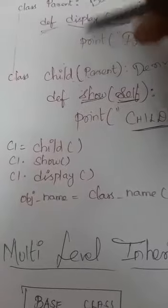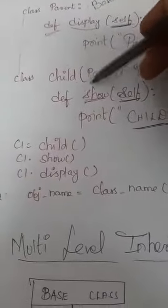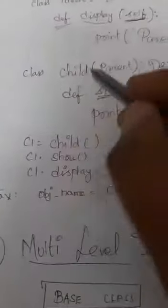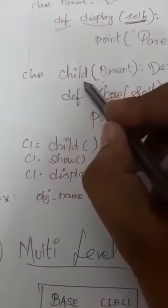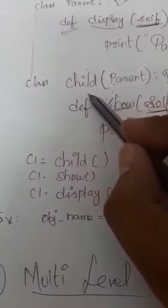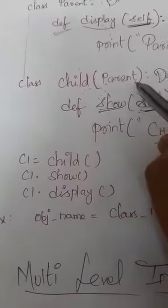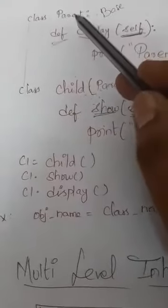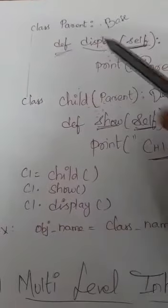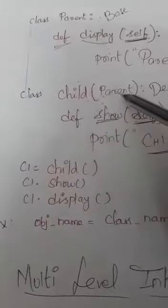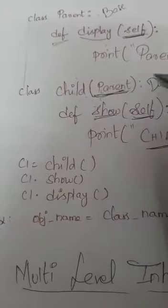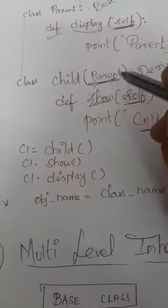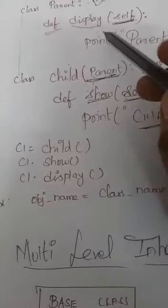But there is no link between base class and derived class, so we have to create a link between them. How to create a link? Where you are declaring the child class, inside the child class definition, you have to use parentheses and pass the base class as your argument. Your base class is 'parent', so you pass 'parent' as an argument inside the derived class. This is very, very important.